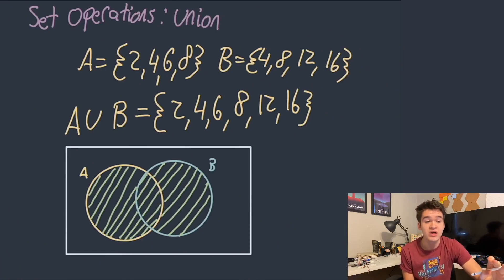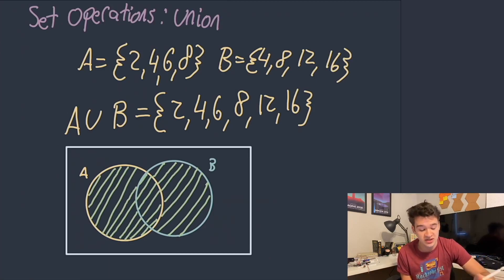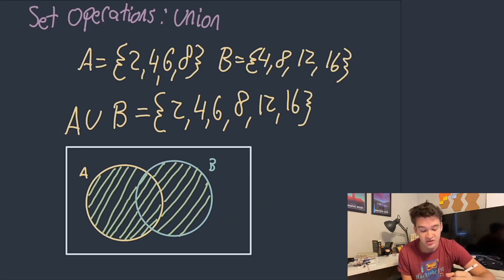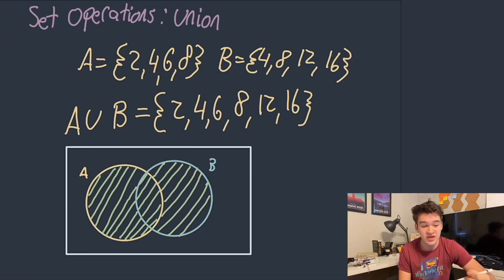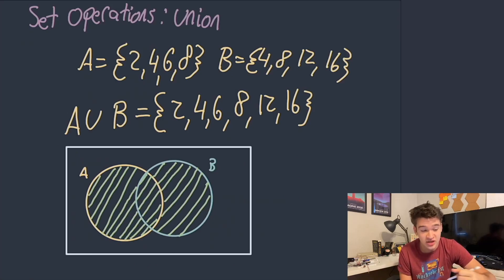The next operation we're going to talk about is the union of a set. Now that we've gone into how we describe sets with certain symbols, we can talk about the actual operations we can carry out on them. The first one is the union. So if we have A = {2, 4, 6, 8} and B = {4, 8, 12, 16}, the union of A and B is going to be {2, 4, 6, 8, 12, 16} — doesn't matter the ordering. This contains every element that's in both sets, and since we don't have duplicates, things that come up in both sets like 4 or 8 only come up once in our union. We can see that represented in our Venn diagram as the shaded area which encapsulates everything that is in either of the sets.